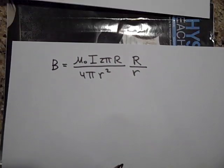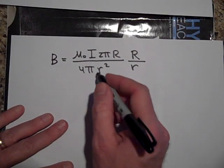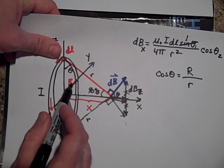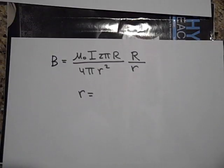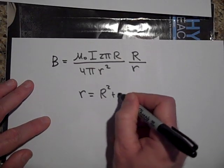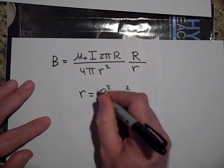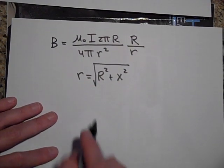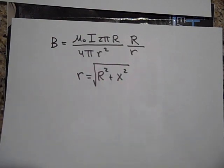Okay, now I'm just going to sub in then for r, for lowercase r. Isn't lowercase r this guy? Isn't it r squared plus x squared? So it's the square root of r squared plus x squared. So I'll sub in for that, and then I'll be done. So sub that in, and that's it. Thanks. Bye.